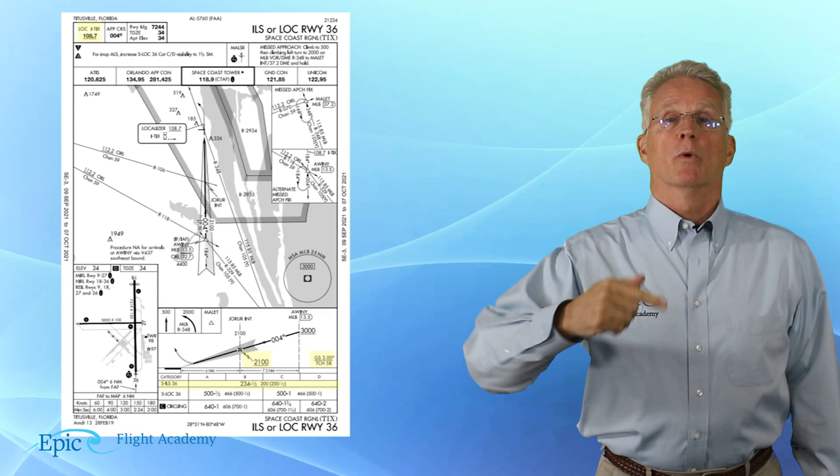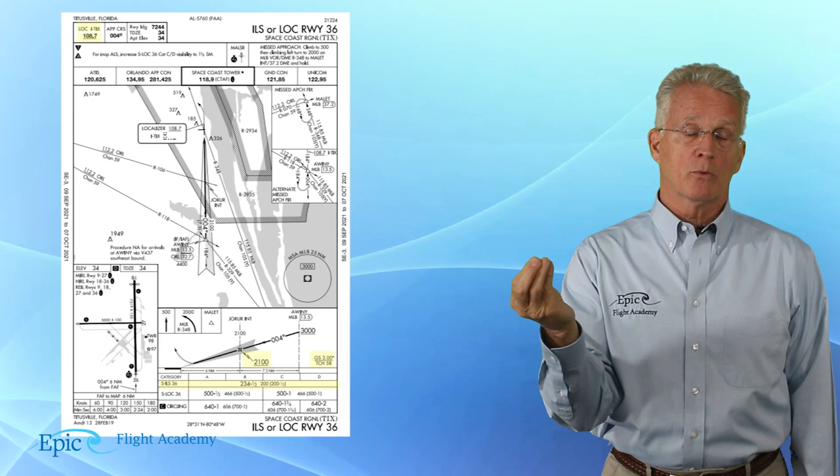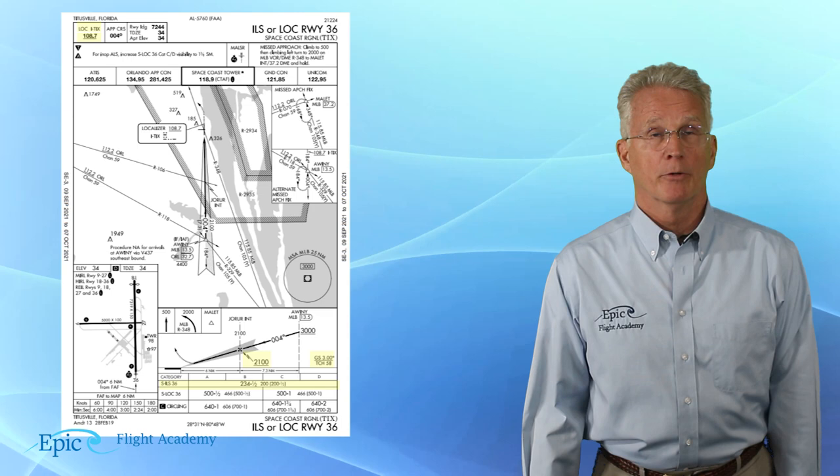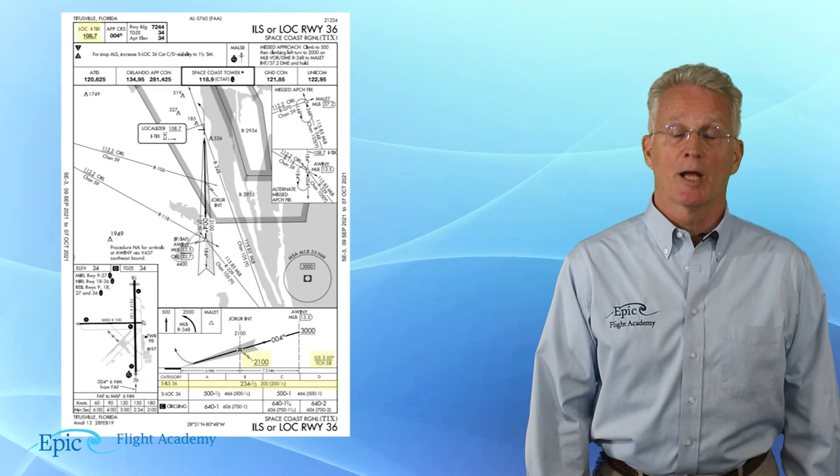In case you're interested in the technicalities about which glide slope frequency is coupled to which localizer frequency, you might be wondering if there's a chart somewhere that relates that. Yes — and guess where it is? It is in the AIM, in Chapter 1. You'll find that chart there.